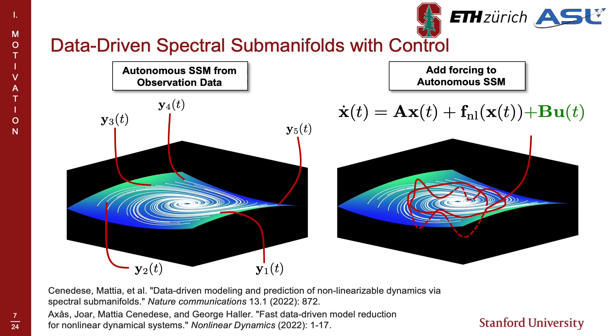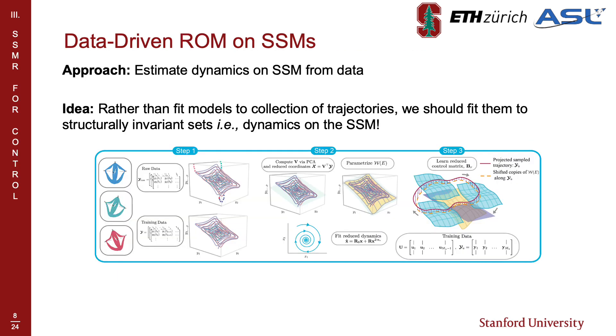In this work, we extract low dimensional dynamics on SSMs from observation data and learn the effect of the input in reduced coordinates. While the controlled trajectories are no longer invariant on the manifold, we demonstrate that the predictive power of SSM reduced models coupled with an MPC framework results in state-of-the-art performance on a high dimensional system. We extract these low dimensional dynamics using a three-step data-driven procedure as outlined in the following slides.